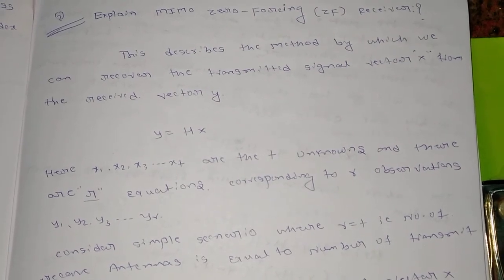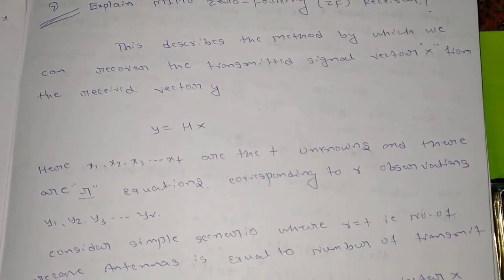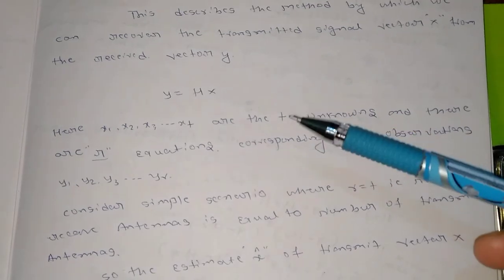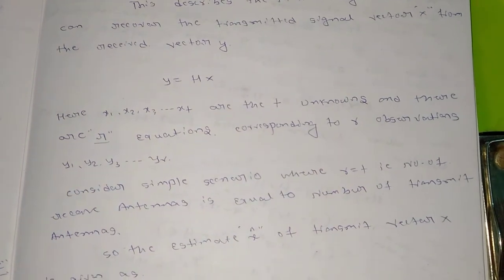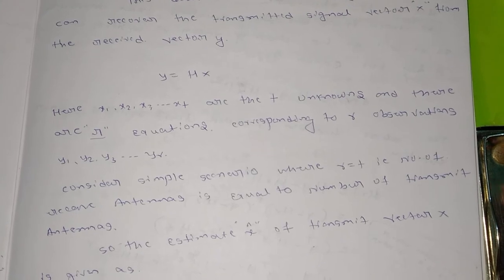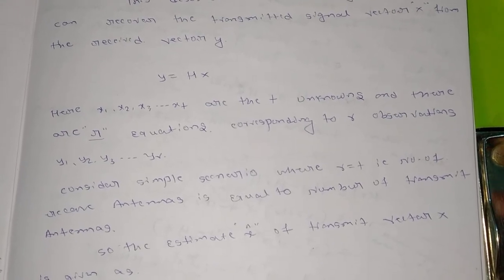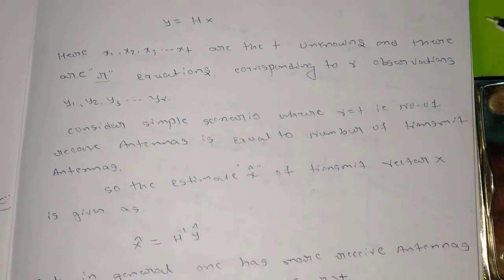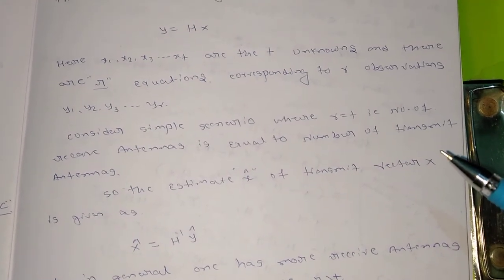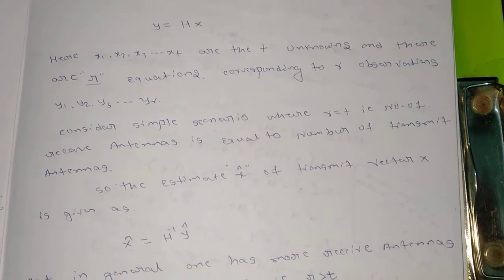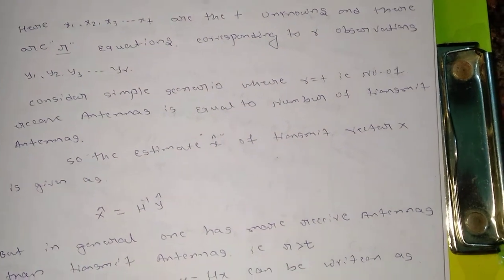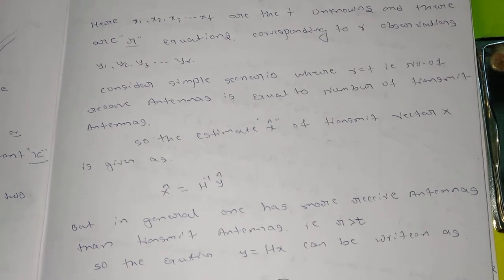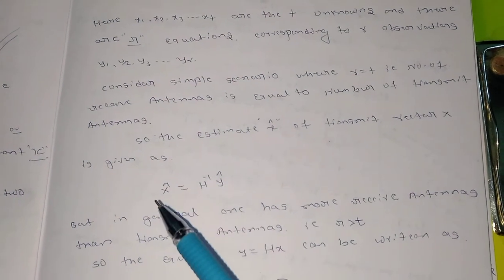This describes the method by which we can recover the transmitted signal vector x from the received vector y using zero forcing. The received vector is represented as y = Hx, where H is the complex channel fading coefficient matrix (h11, h12, up to h_T×R), x is the transmitted symbol vector, and y contains the received symbols. For the simple scenario where R = T (number of receiving antennas equals transmitting antennas), the estimate x̂ = H⁻¹y.